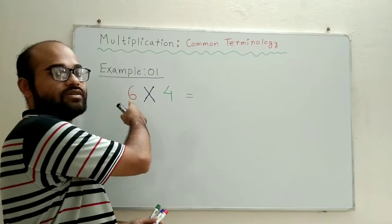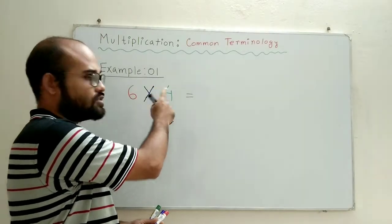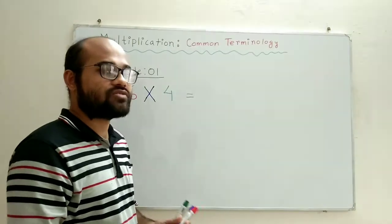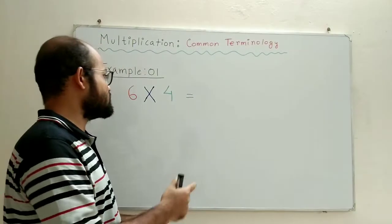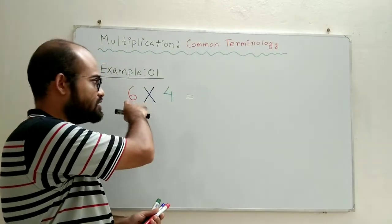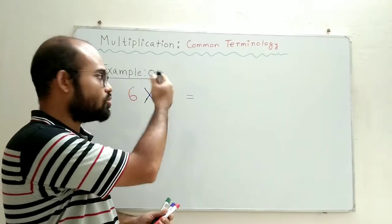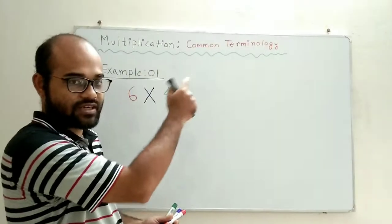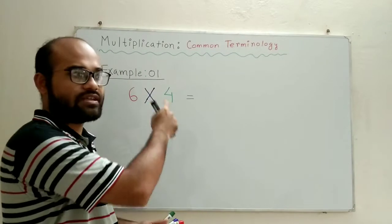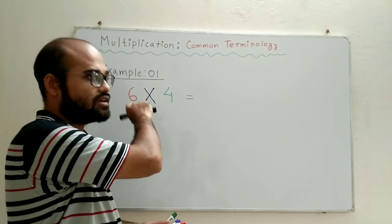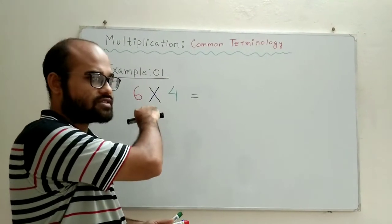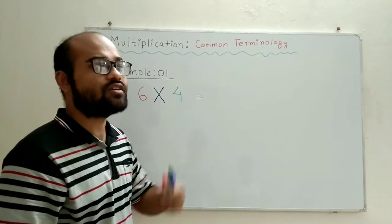In this example we have been asked to multiply 6 with 4. This is a fairly straightforward problem. All we need to do is either read the table of 6 or the table of 4 and reach the answer. First, I will choose to read the table of 6 because reading the table of 6 I will be able to reach the answer quickly.